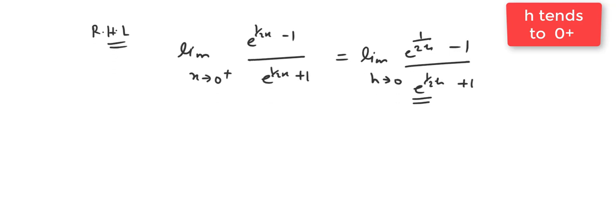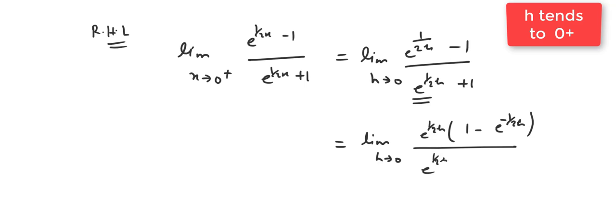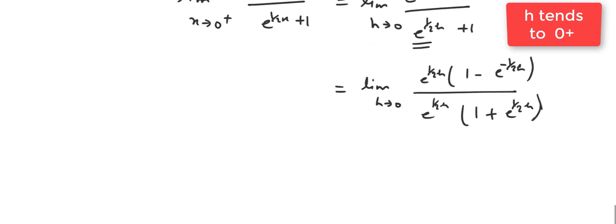We can obtain the right-hand limit with some manipulation. Let us take e^(1/2x) as a common factor from numerator and denominator. We obtain e^(1/2x) · (1 - e^(-1/2x)) divided by e^(1/2x) · (1 + e^(-1/2x)). The e^(1/2x) terms cancel. As h → 0⁺, e^(-1/2h) → 0 as before, so the limit becomes (1 - 0)/(1 + 0) = 1.